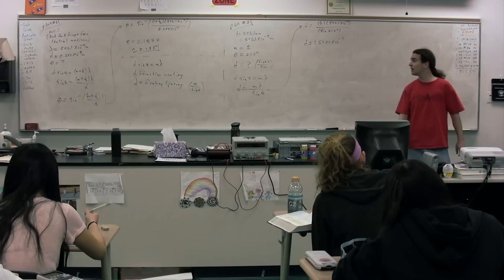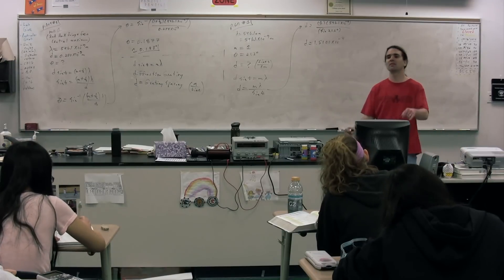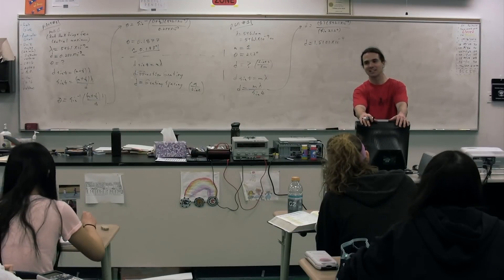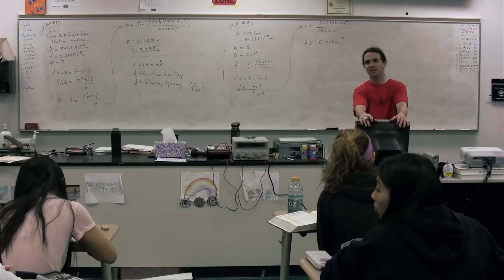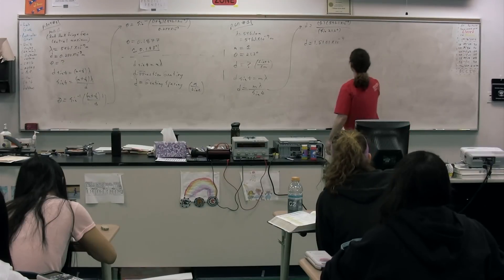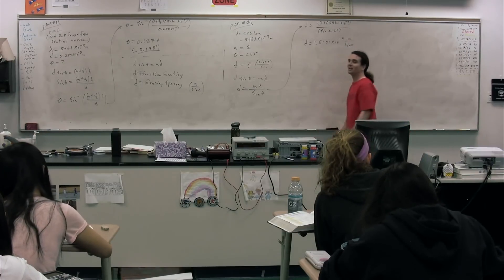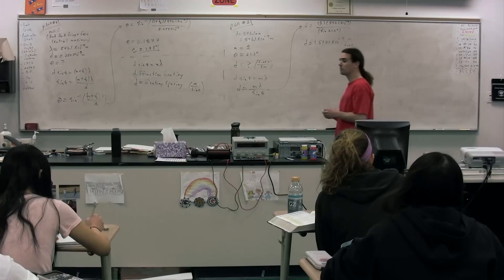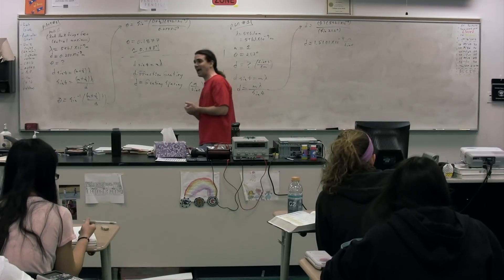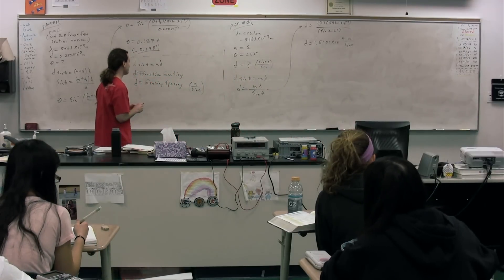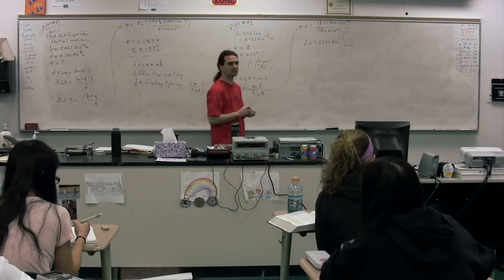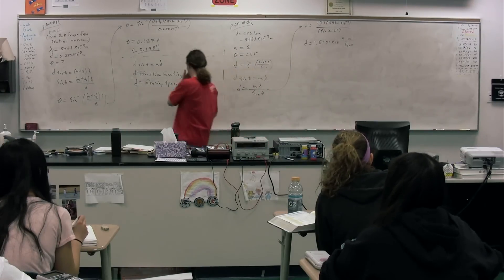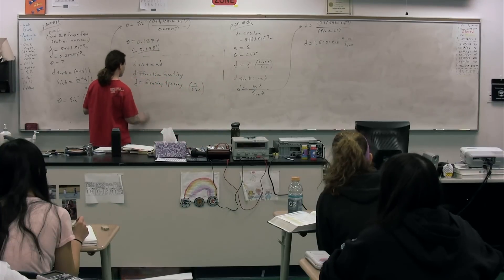1.5101 times 10 to the negative 7. What are the dimensions on this? This is meters per line. Is that what they asked us to find, class? No. So it's important to realize that they have not actually asked us to find the grating spacing, the distance between the gratings, but rather one over the grating spacing.